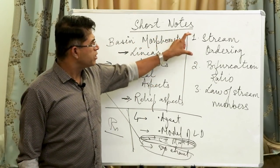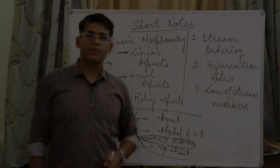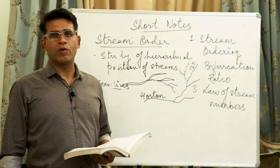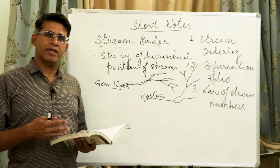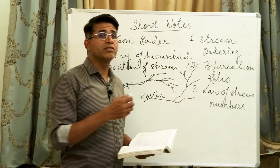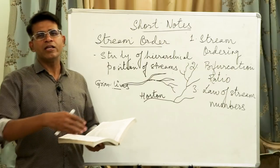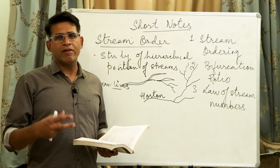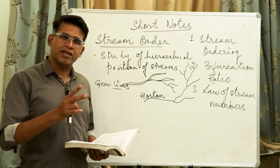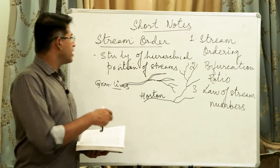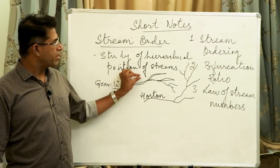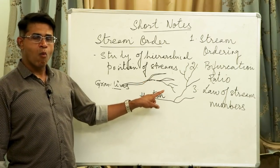Now I'll explain each briefly so you understand what we are studying. We are taking one of the first topics under the linear aspects of drainage morphometry — stream ordering. In the study of a drainage basin where there are many rivers, one main river fed by tributaries and sub-tributaries, we are studying how the rivers are related to one another in terms of hierarchy. Stream order is a study of the hierarchical position of streams.